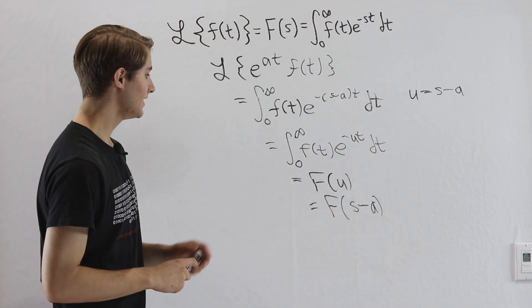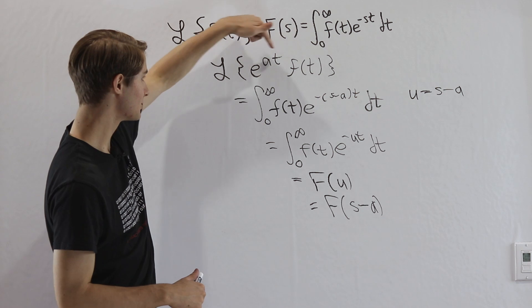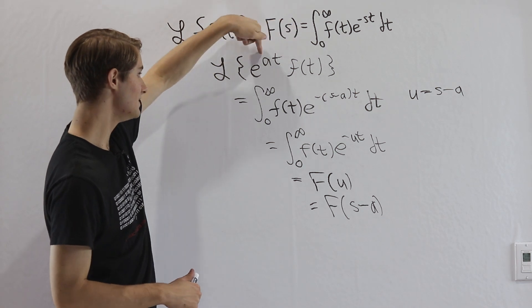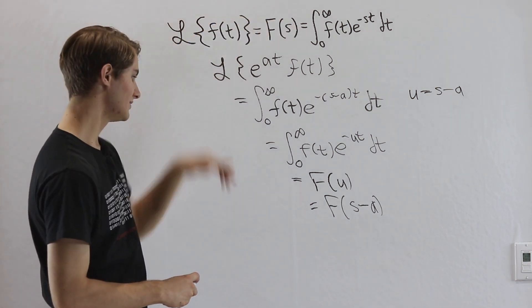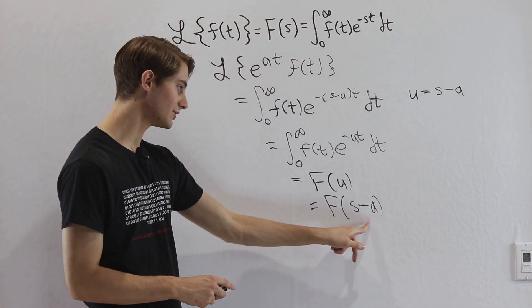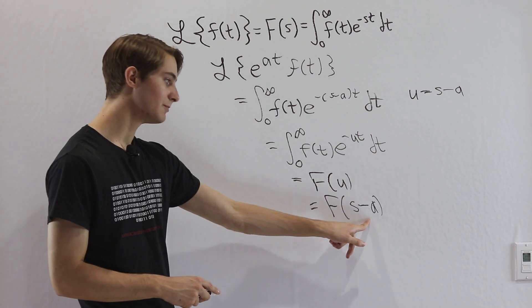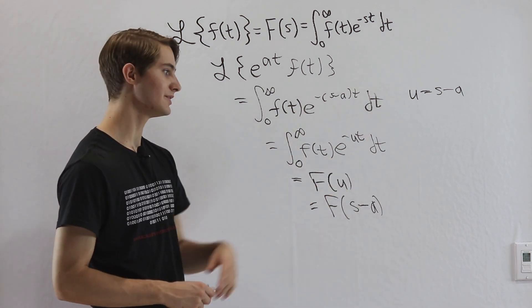So when we multiply a function by e^(at), that has the effect of shifting the Laplace transform over by the value of a to the right.